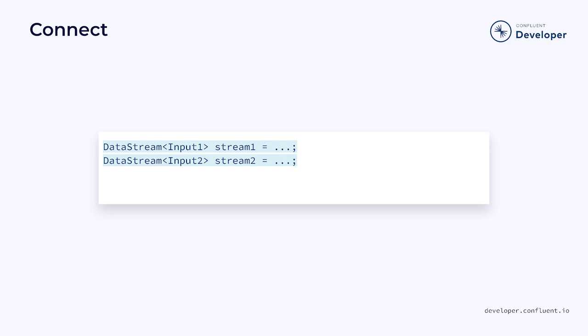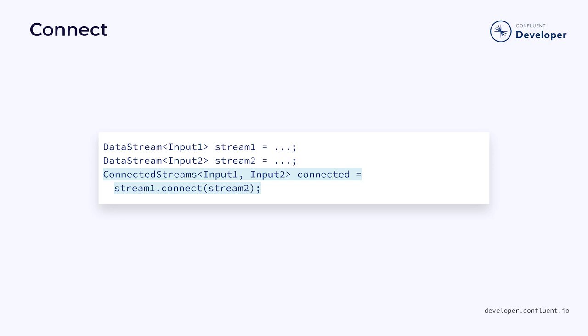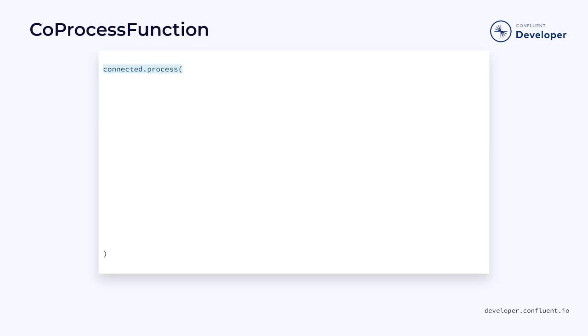However, what if we have two streams with different data types that we need to merge into one? One option is to leverage the connect operator to create connected streams. It will merge our two streams into one while maintaining their separate data types, and then convert those two data types into a single unified type. This is done with the process operation.